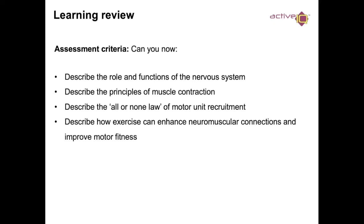To recap the learning outcomes: you should be able to describe the role and functions of the nervous system, describe the principles of muscle contraction, describe the all-or-nothing law and motor unit recruitment, and describe how exercise can enhance neuromuscular connections and improve motor fitness. More information is available online in the anatomy and physiology series, and you can also use your manuals or drop us an email.